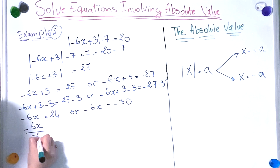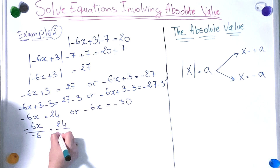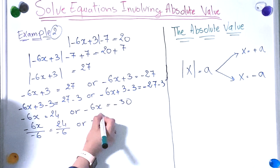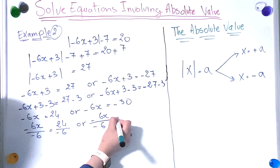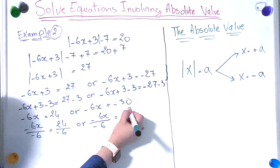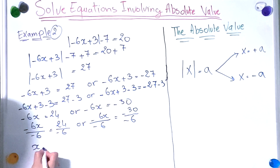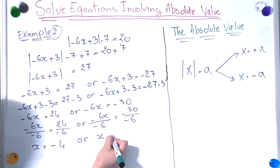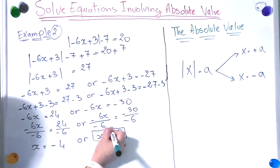Now we divide both sides by minus 6. So minus 6x over minus 6 gives x equals minus 4, or minus 6x over minus 6 equals minus 30 over minus 6, giving x equals 5. So we have found two solutions: x equals minus 4 or x equals 5.